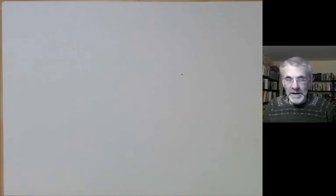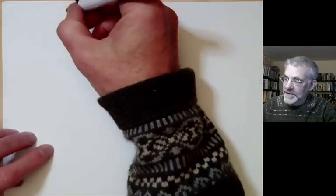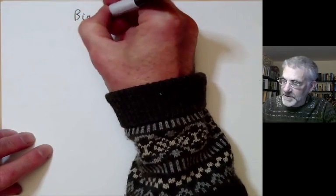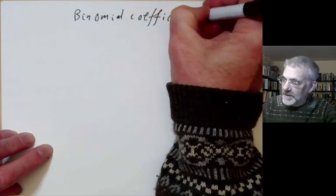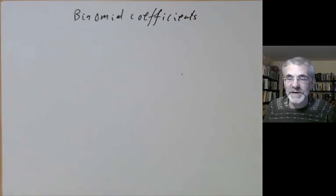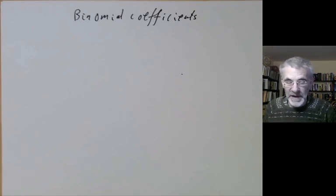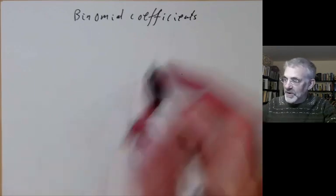This lecture is part of the course Berkeley Math 115, which is an introductory undergraduate course on number theory, and it will be on binomial coefficients. This lecture will be in two parts. This video will be a review of some basic properties of binomial coefficients, and the next video will cover some applications of binomial coefficients to number theory. I will start off by reviewing the definition of a binomial coefficient.